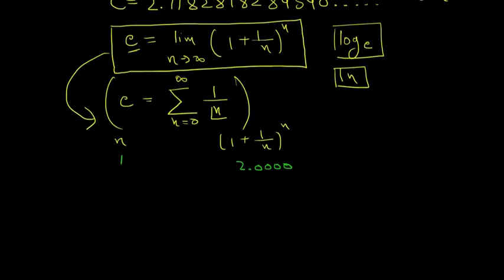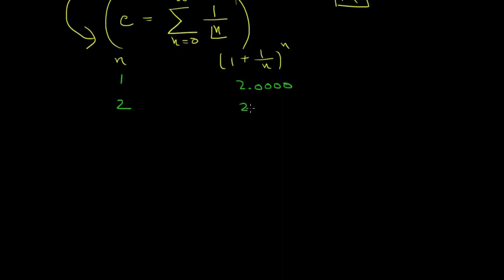If we put n equals 2, then it's 2.2500. If we put 5, then this becomes 2.48832.